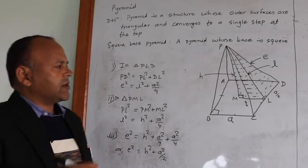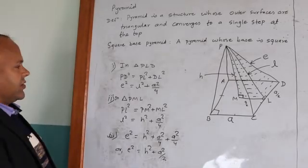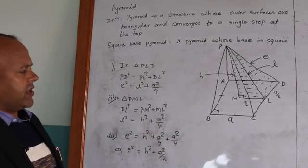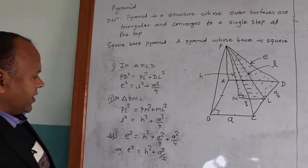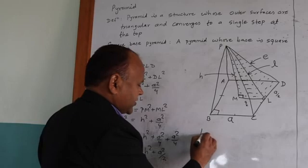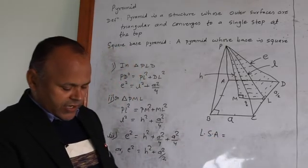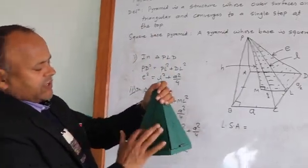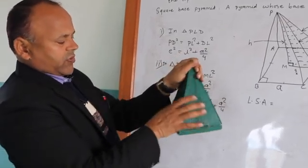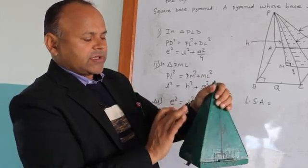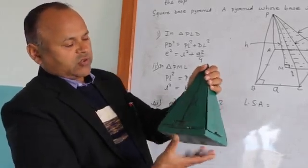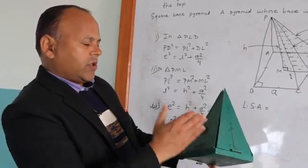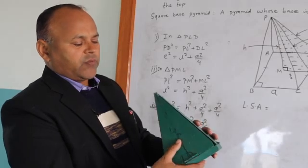From these three relations, out of these four variables, if any two variables are known we can find the other variables. These are the relations of E, L, H, and A. Now we can discuss the lateral surface area, total surface area, and volume of the pyramid. Lateral surface area is also called the area of the triangular faces of the pyramid.